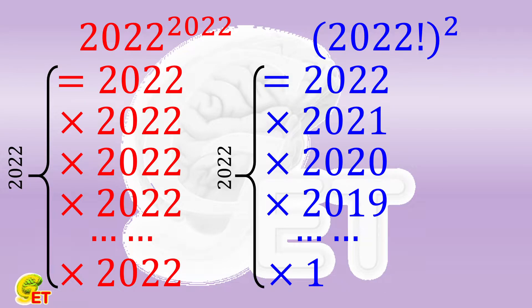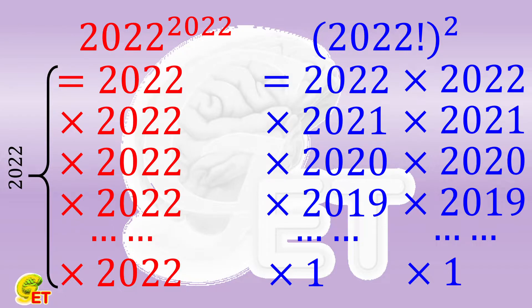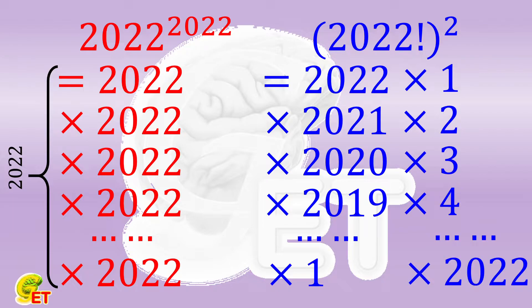However, what we want is not the factorial of 2022 itself, but its square, so we have to multiply them for another round. Of course, in the second round, we can do it in the reversed way, so we write them down from 1 to 2022.